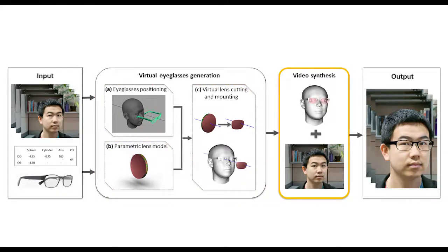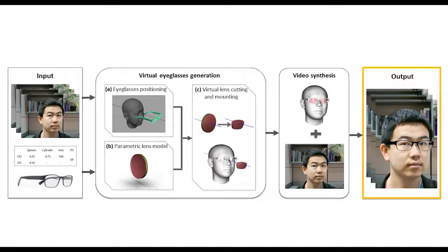In the video synthesis stage, we render the virtual eyeglasses and insert them into the input image sequence, taking into account effects of refraction, reflection, and shadows. The output is a synthesized video where the user is wearing the virtual prescription eyeglasses. We will now describe each step in detail.